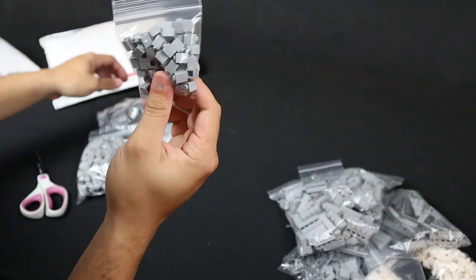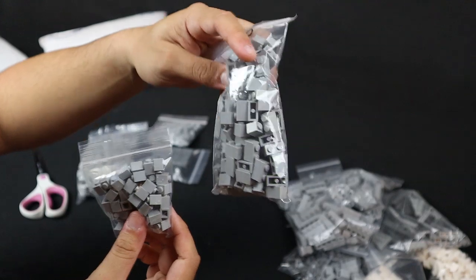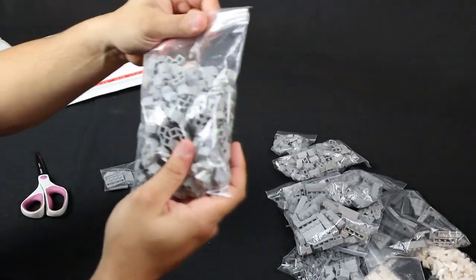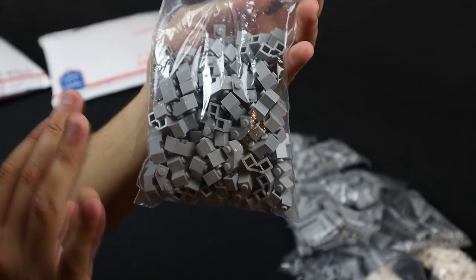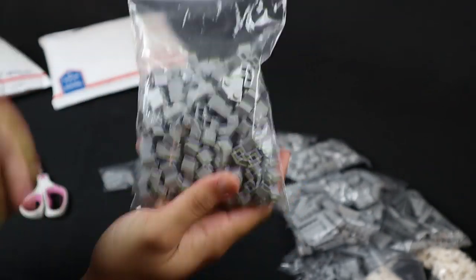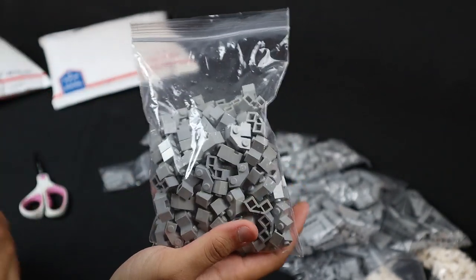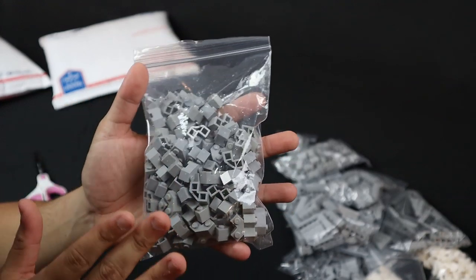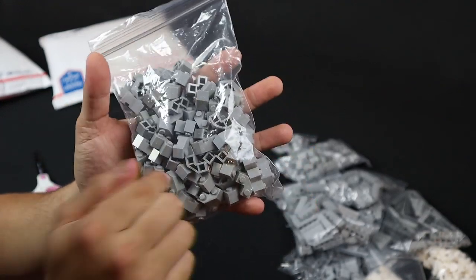Here we have some more brick, we have 1x1 and 1x2, which again will be used for the barracks. Here we have some of the 2x2 corner pieces. These are going to be used for the siding of the actual barracks itself because essentially the barracks is curved on an axis, so I wanted to best replicate that. This was the most affordable way I could do it, so we got a whole bunch of those for the entire mock.